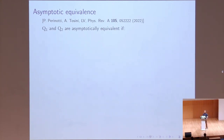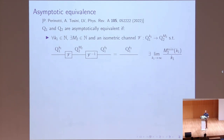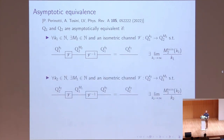The first notion we need is that of asymptotic equivalence. We say that two systems are asymptotically equivalent if, for any K₁ there exists an M₂ such that K₁ copies of system Q₁ can be isometrically encoded in M₂ copies of system Q₂; if we take the smallest such M₂, the limit of the ratio M₂/K₁ exists as K₁ goes to infinity; this situation is symmetric so we can go from Q₂ to Q₁ in the same way; and the two limits are the inverse of each other.